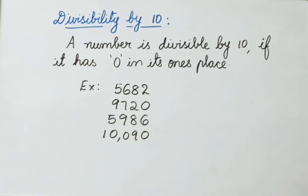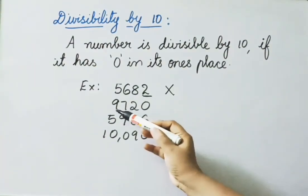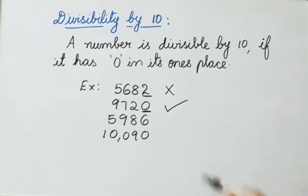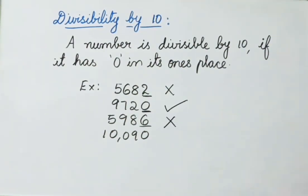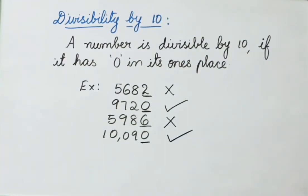Divisibility by 10: A number is divisible by 10 if it has 0 in its ones place. For example: 5682 has 2 in ones place, so it is not divisible by 10. 9720 has 0 in ones place, so it is divisible by 10. 5986 has 6 in ones place, so it is not divisible by 10. 10090 has 0 in ones place, so it is divisible by 10. Only numbers with 0 in ones place are divisible by 10.